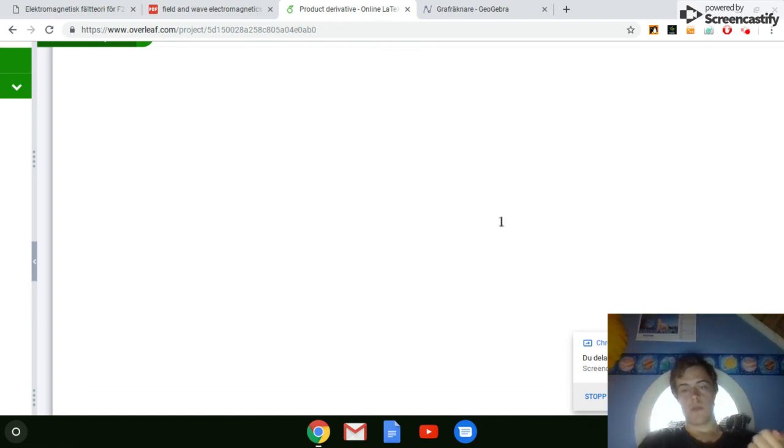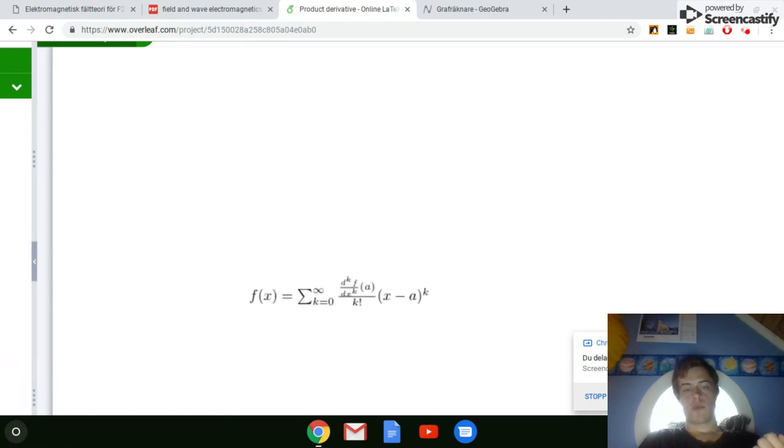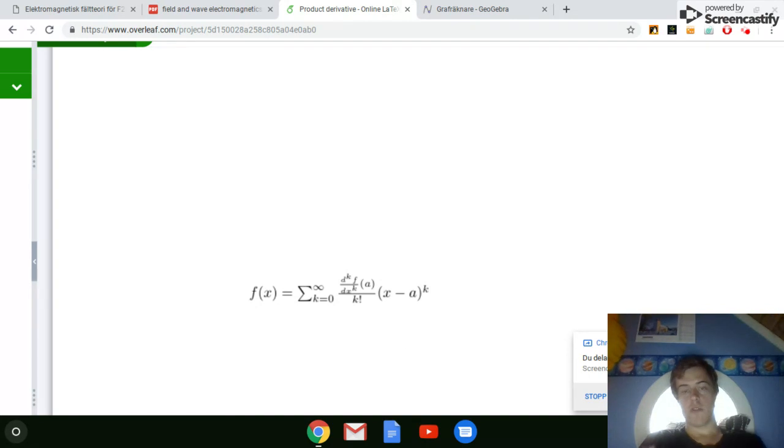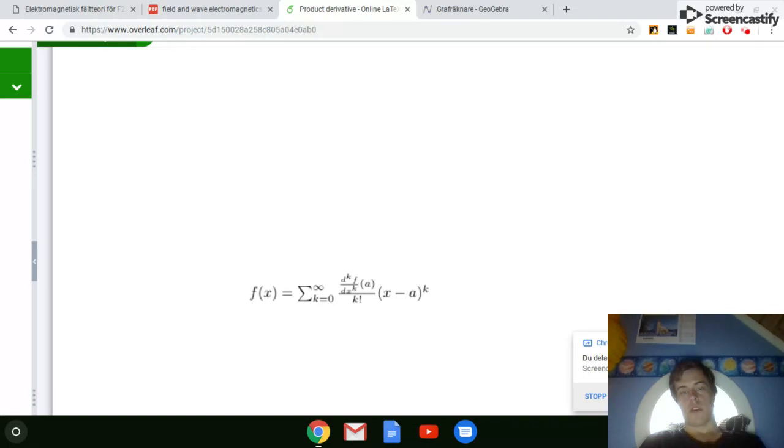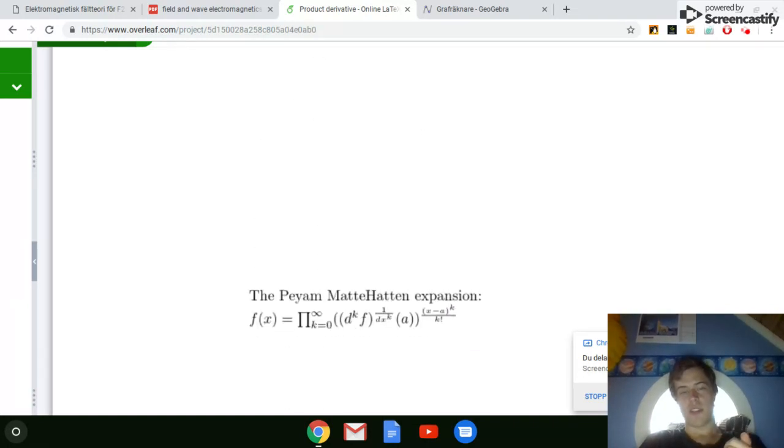And as you all know, for regular functions, we have this formula, which is the Taylor formula for the function. And I think we should have something similar for the product derivative. And I think it should be this identity. And I have chosen to call it the Payam-Mattehatten expansion.